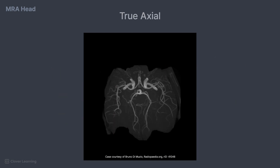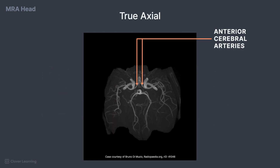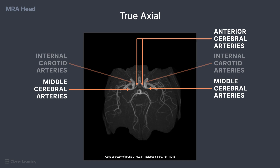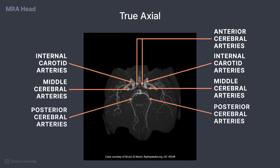For the true axial view, the anterior cerebral arteries, middle cerebral arteries, and internal carotid arteries are seen. For the posterior circulation, the posterior cerebral arteries and basilar artery are easily identified.